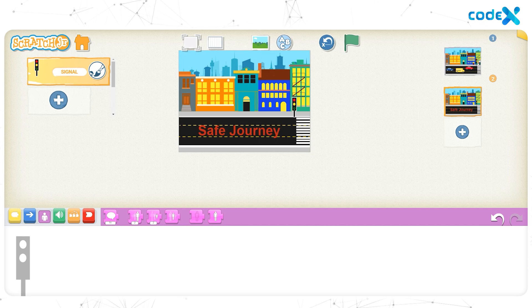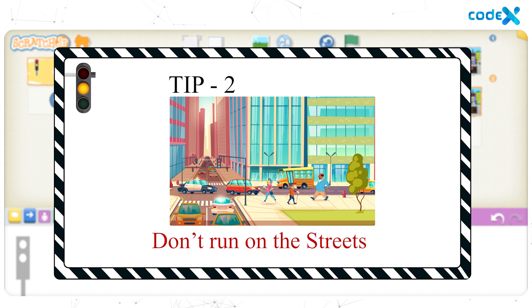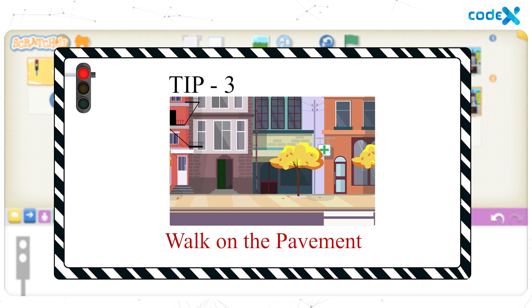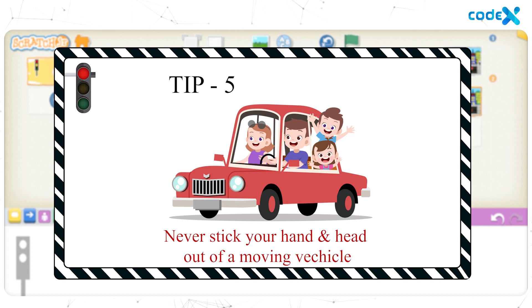Here are some road safety tips. Number one: cross the road only through the zebra crossing. Number two: do not run on the streets — it puts you at risk. Number three: always walk on the pavement and never on the road. Number four: while in a car, always strap on your seat belt. Number five: never stick your hand or head out of a moving vehicle — it's dangerous. Keep these facts in mind while on the road.